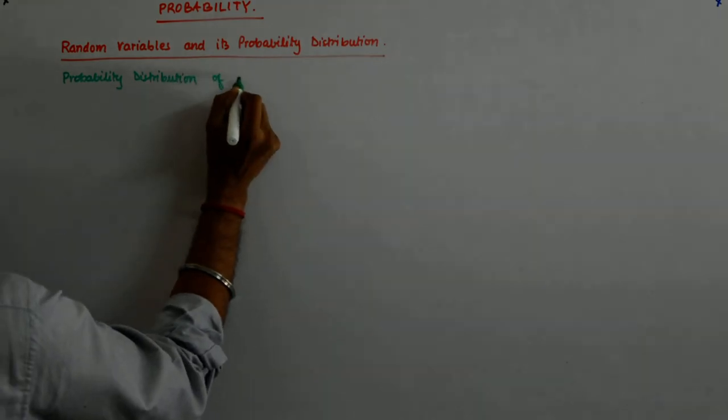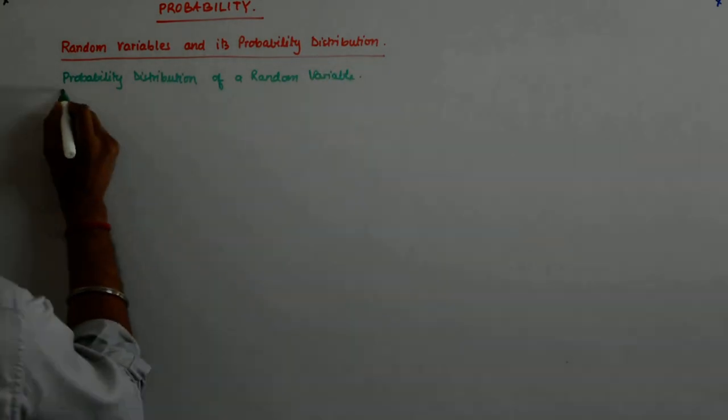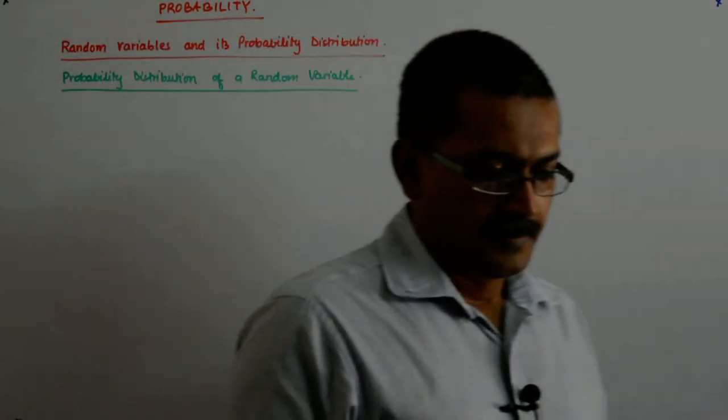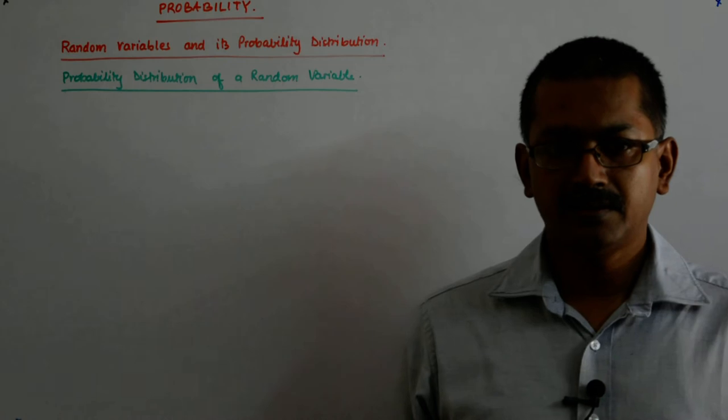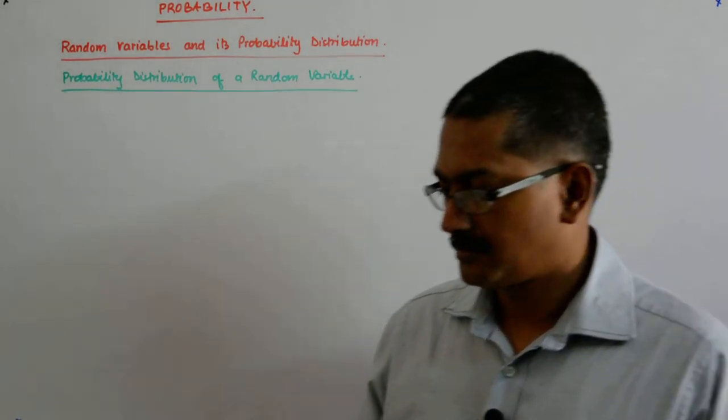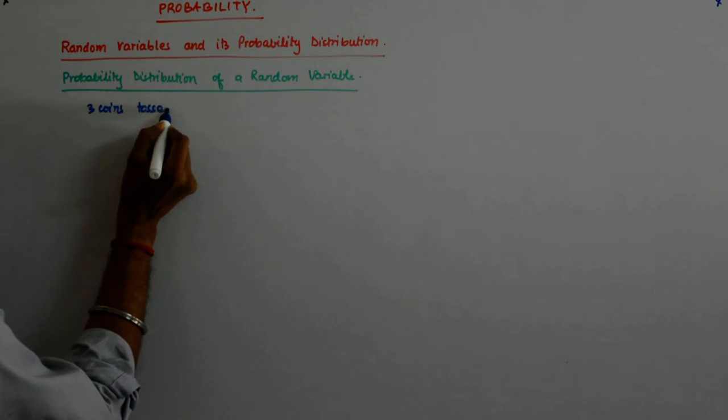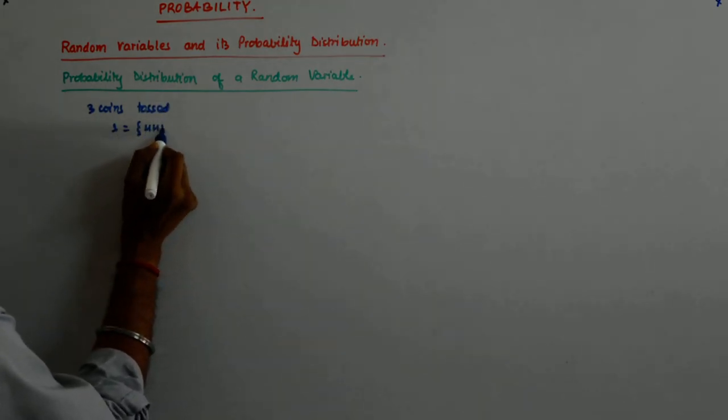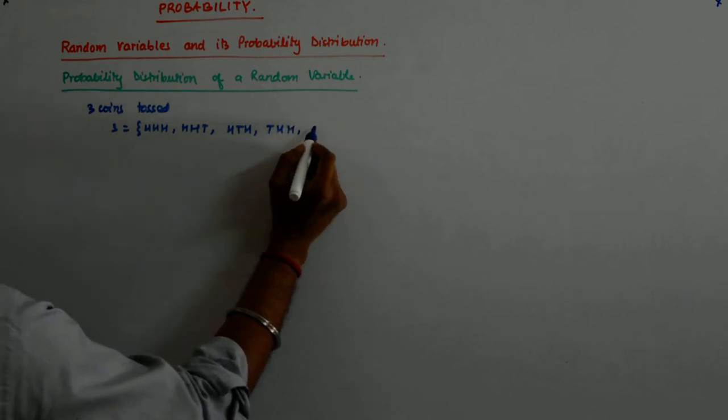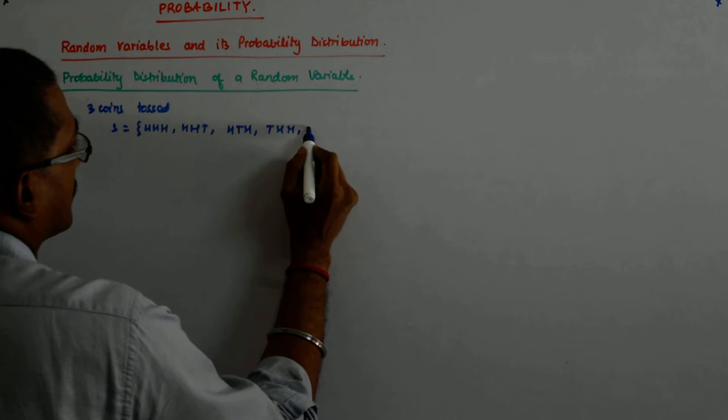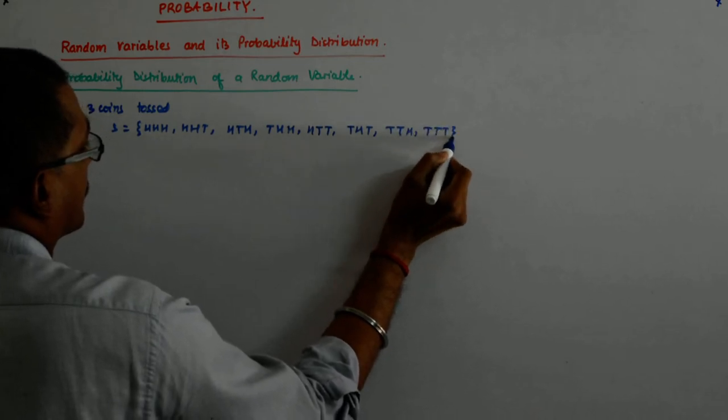So, right now what did we do? We said that again, I will have to maybe write the same 3 coins tossed, sample space. S is HHH, HHT, HTH, THH, HTT, THT, TTH, TTT correct?